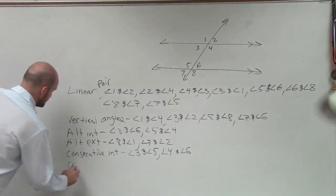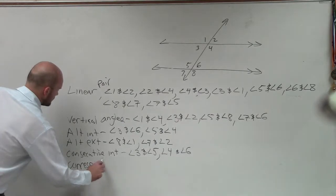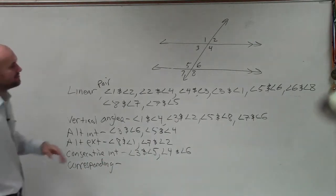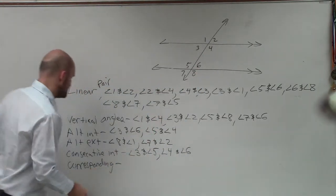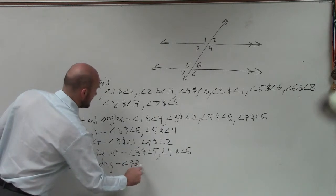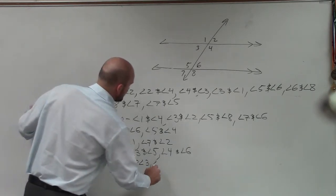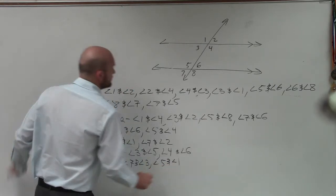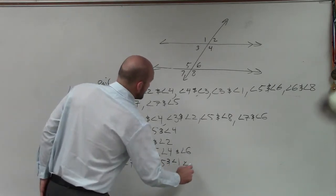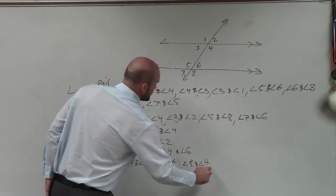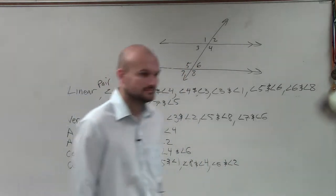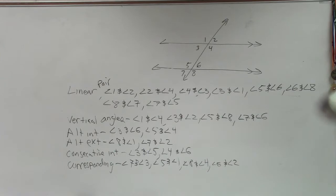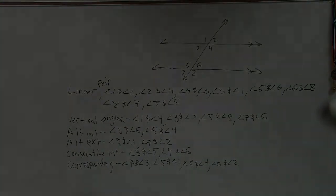So last one is corresponding. So corresponding angles. Remember, angles that are in the exact same position. So you have two parallel lines. These are in the exact same position. So therefore, you have angle 7 and angle 3. You have angle 5 and angle 1. You have angle 8 and angle 4. And you have angle 6 and angle 2. And there you go. Guys, you have to know how to define.